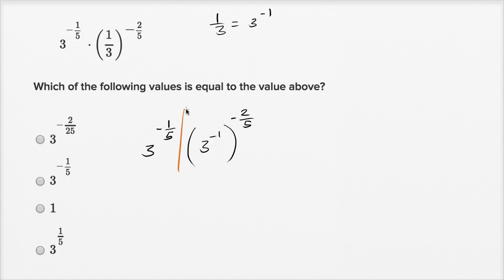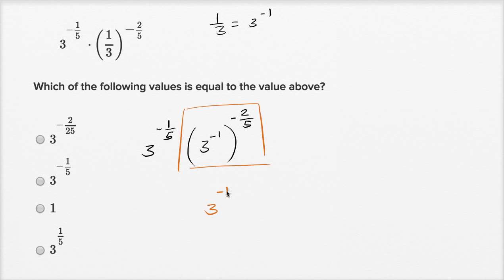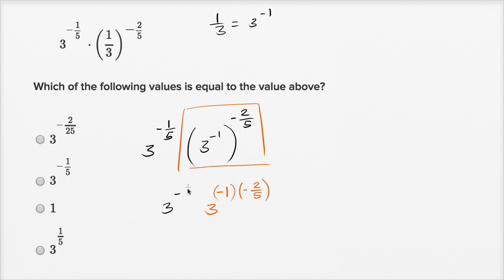This business right over here — if I raise something to an exponent and then raise it again to another exponent, that's going to be the same thing as taking our original base and raising it to the negative one times negative two-fifths power. So raising three to the negative one and then to the negative two-fifths is the same as raising three to the negative one times negative two-fifths power.